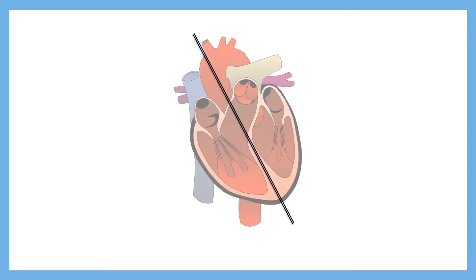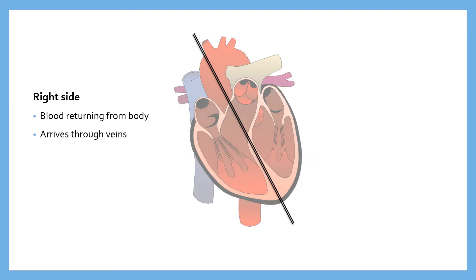On the right side of the heart, the blood flowing through is returning from the body. It's been sent around the body, delivered its oxygen, picked up carbon dioxide, and is now returning to the heart. It arrives through veins — the word vein contains the word 'in', so a vein is any vessel going in towards the heart. This blood is deoxygenated, meaning some of its oxygen has been removed and used in the tissues for respiration.